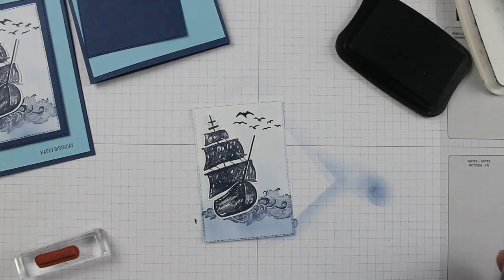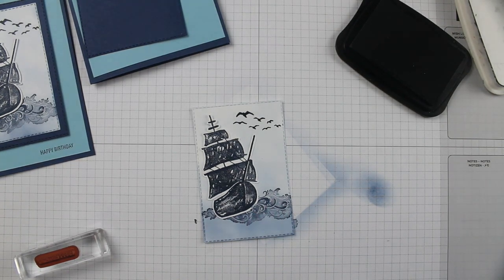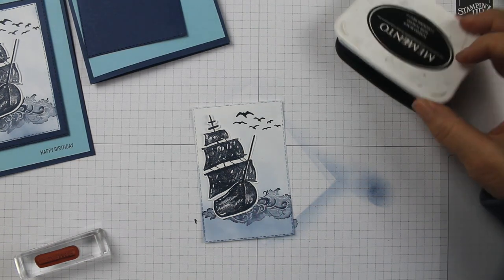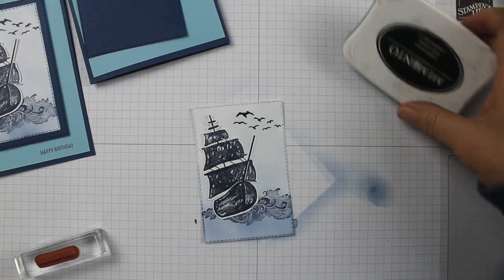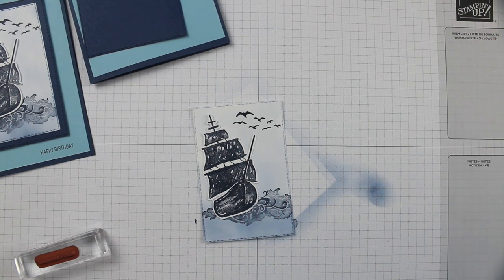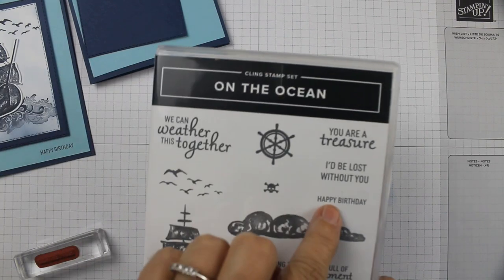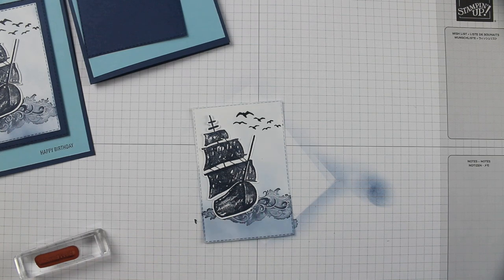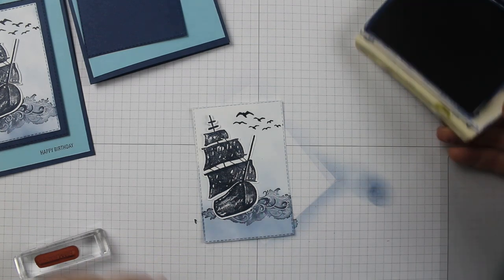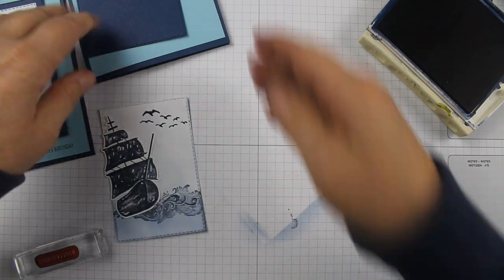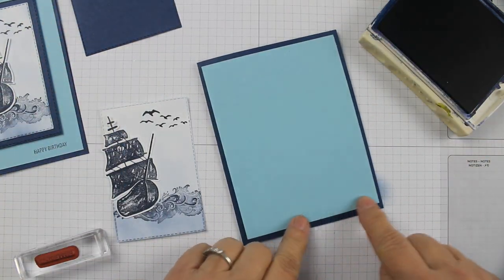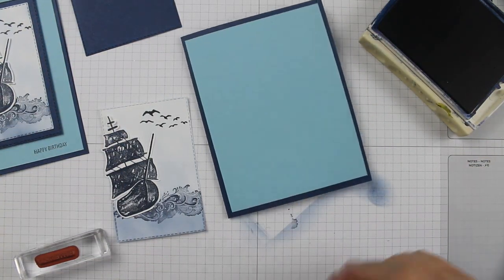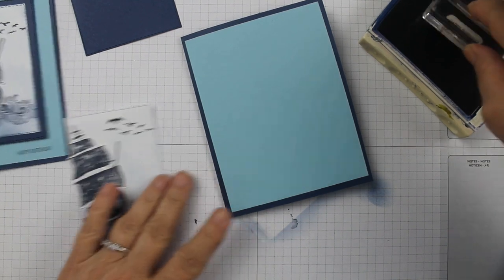Then I took the happy birthday - this little bitty happy birthday from the On the Ocean stamp set - and we're going to put that to the side real quick. I'm going to do this before I forget. I should have done it before I glued it down, but it's okay. I want to do it before I forget.